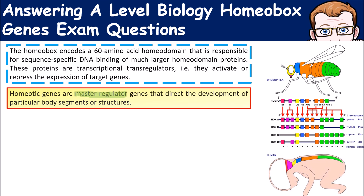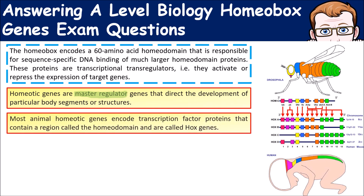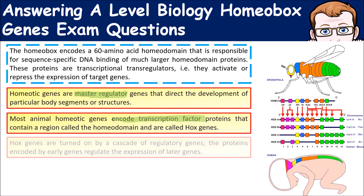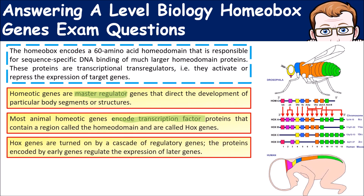We refer to these homeobox genes as being master regulator genes because they regulate the turning on or turning off of other genes further down the line. They do this by encoding transcription factors — proteins that bind to DNA and either increase or decrease the transcription of a particular gene. When HOX genes are turned on, a cascade of regulatory genes is activated that controls the expression of genes later on.